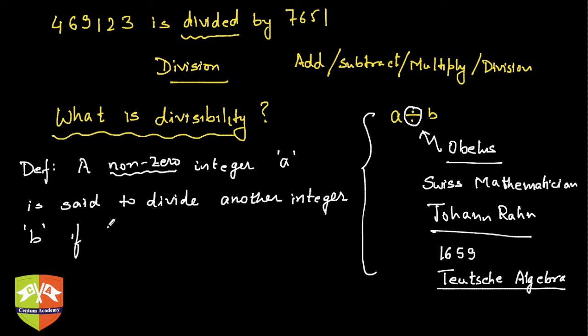...if there exists another integer c. Again I have not used non-zero. A non-zero integer a is said to divide another integer b if there exists integer c such that b equals a times c.